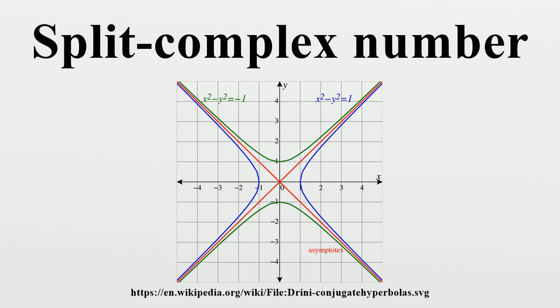These three properties imply that the split complex conjugate is an automorphism of order 2. The modulus of a split complex number z equals x plus jy is given by the isotropic quadratic form. It has an important property that it is preserved by split complex multiplication.